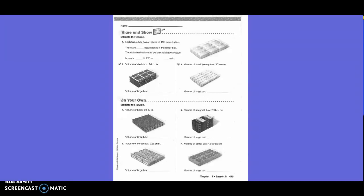Share and show. Estimate the volume. Each tissue box has a volume of 125 cubic inches. So, each one of the little boxes inside the bigger box is 125 cubic inches. How many tissue boxes are there in the larger box to the right? 9. Okay. There are 9 tissue boxes in the larger box. The estimated volume of the box holding the tissue boxes is 9 times 125. So, I do 125 times 9. 5 times 9 is 45, which gives us 1,125 cubic inches.